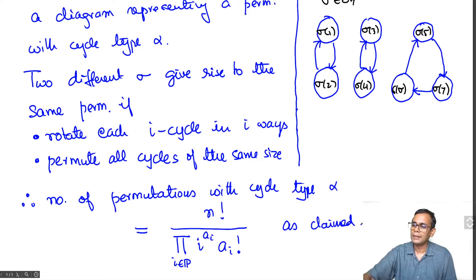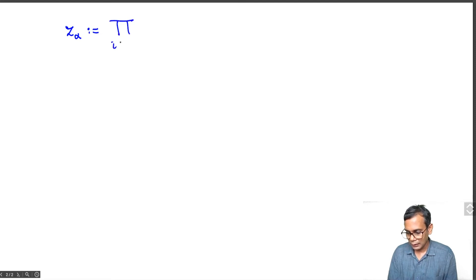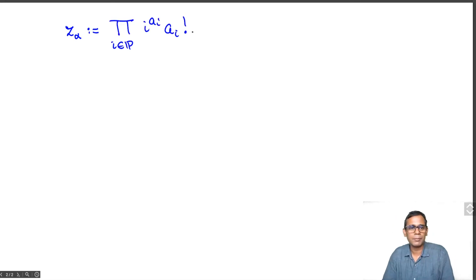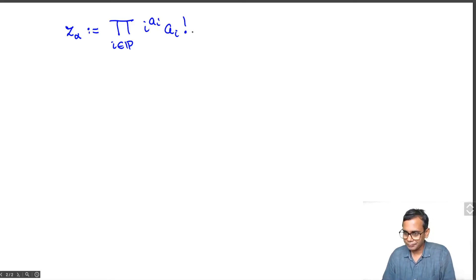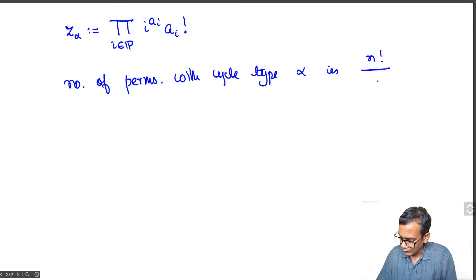That is the proof, and now we are ready to compute the cycle index polynomial for the symmetric group. It is convenient to introduce standard notation: Z_alpha is defined to be the product over i in P of i^(a_i) · a_i!. This notation comes from group theory — Z_alpha turns out to be the order of the centralizer group of a permutation with cycle type alpha, hence the letter Z from the German word for 'central'. We have: number of permutations with cycle type alpha = N! / Z_alpha.